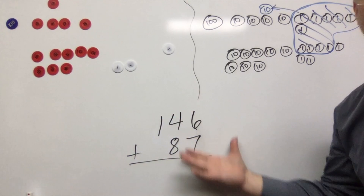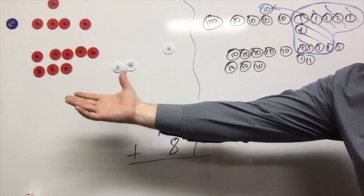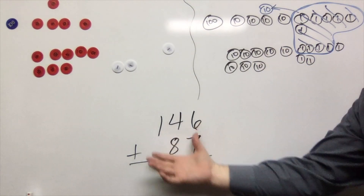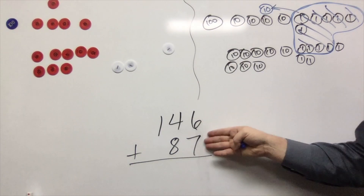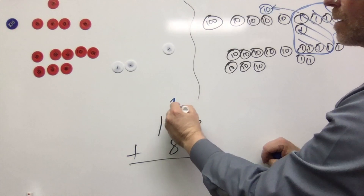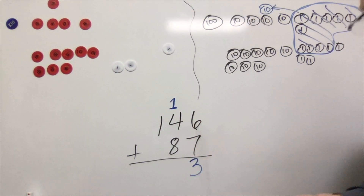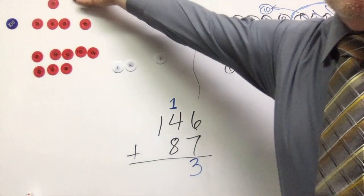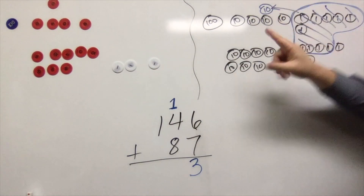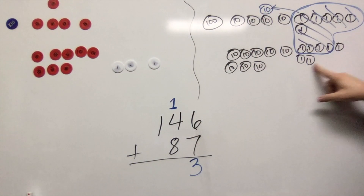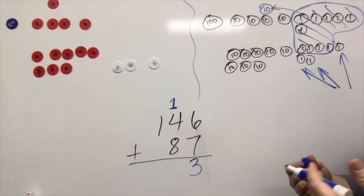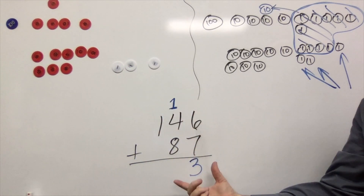So what is that going to look like down here in the abstract? We have the concrete, the pictorial or representational phase, and now the abstract. We knew that six plus seven is 13, which gave us a brand new ten plus three ones leftover. We can see that right here — here's our brand new ten and three ones leftover — and we can see it here in the abstract.